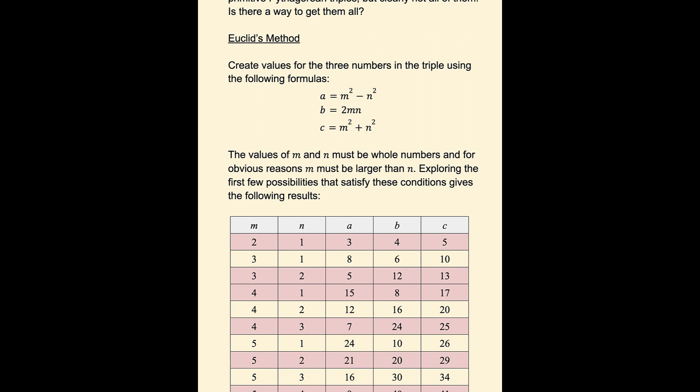M and n have to be whole numbers, and for obvious reasons, m must be larger than n. If m were less than n, then a would be negative. If m was equal to n, then a would be 0. We can't have either of those options.